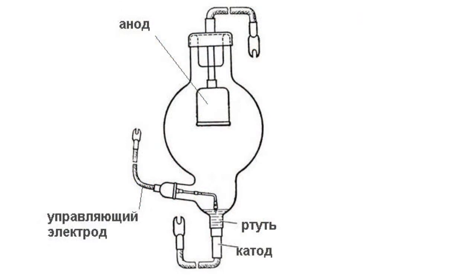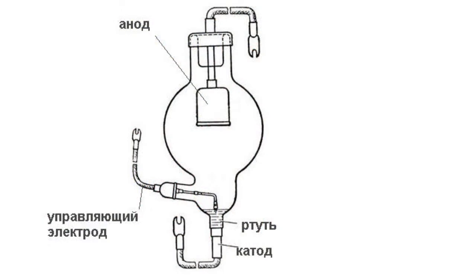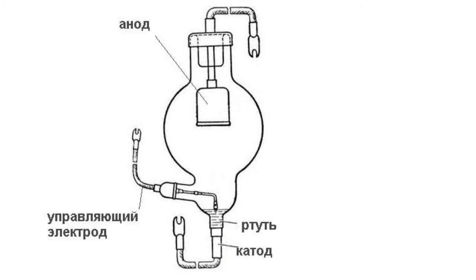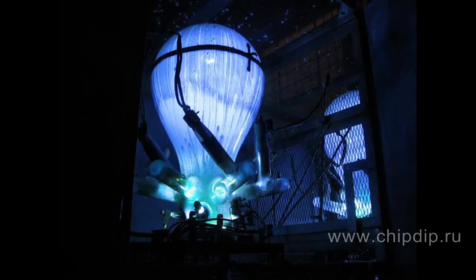This is a single anode ionic tool with a mercury cathode controlled by an arc discharge. The ignitron has a simple design. It has two massive electrodes, anode and cathode, sunk in liquid mercury, and a controlled electrode which is also sunk in mercury at a certain distance from the cathode.